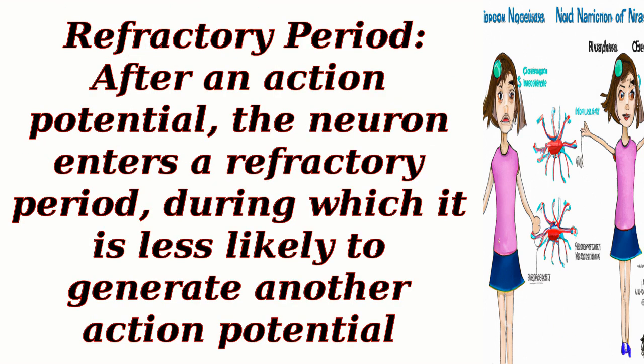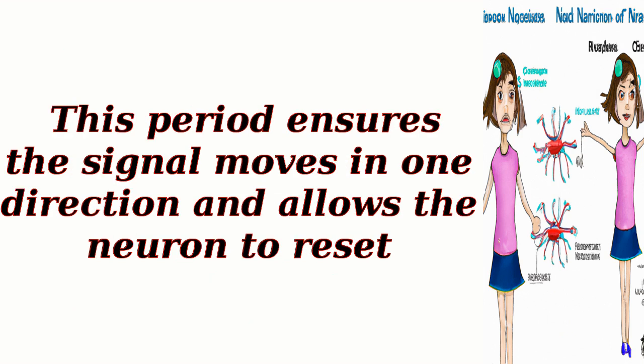Refractory period: After an action potential, the neuron enters a refractory period, during which it is less likely to generate another action potential. This period ensures the signal moves in one direction and allows the neuron to reset.